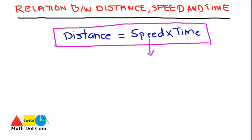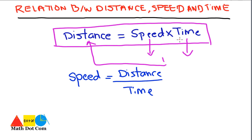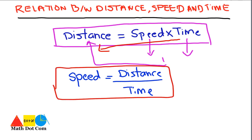They are related to each other by this formula. It means if you are given with speed and time, you can easily calculate the distance. If you are given with any two quantities out of these three, you can find the remaining one. We can also write this formula as speed is equals to distance over time. If you have distance and time, you can easily find the speed.